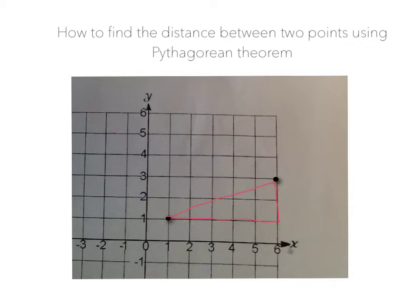What you're going to want to do is start counting your solid sides that go straight up and down. I'll count the bottom one first: one, two, three, four, five. So that side is five. Now for the right side: one, two.